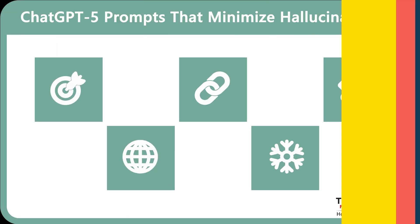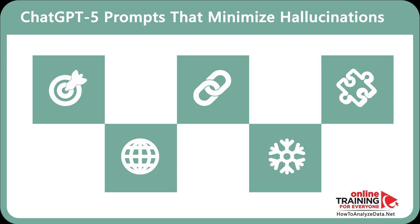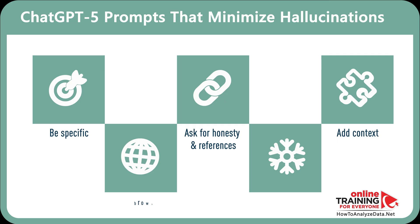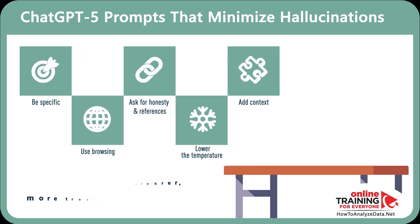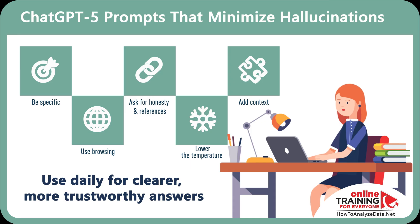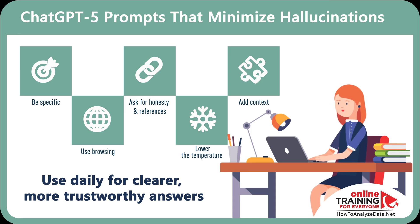Let's recap. To minimize hallucinations in ChatGPT 5, you need to be specific, ask for honesty and references, add context, use browsing, and lower the temperature. Make sure to apply this daily when you're writing resumes, studying, or building client proposals, and you will get clearer, more trustworthy answers. If you found this content helpful, don't forget to like, share, and subscribe to Online Training for Everyone. Have a great day.